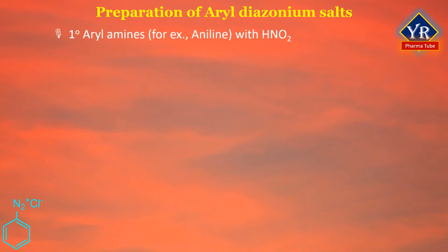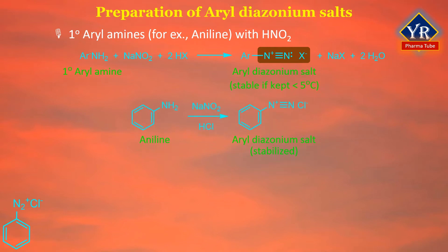The most important reaction of amines with nitrous acid is the reaction of primary aryl amines. For example, aminobenzene, generally known as aniline, reacts with nitrous acid to yield stable aryl diazonium salts. Although aryl diazonium salts are unstable, they are far more stable than aliphatic diazonium salts and do not decompose at an appreciable rate in solution when the temperature is kept below 5°C.